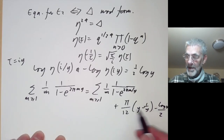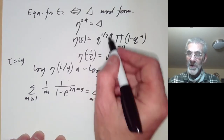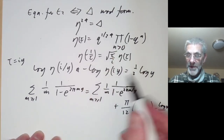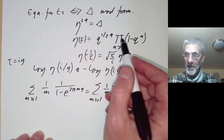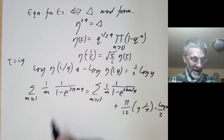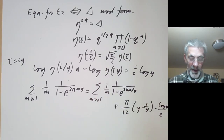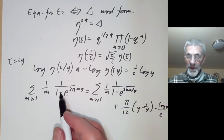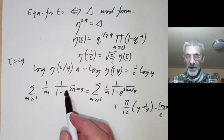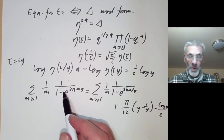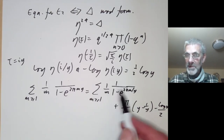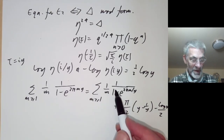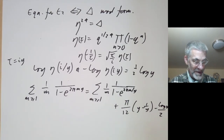The term with η to the 1/24 gives one contribution, and the two sum terms come from log of η — one from summing over rows and one from summing over columns of E2.